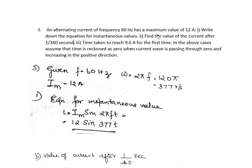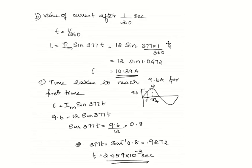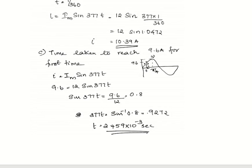The third part is to find the time taken to reach 9.6 ampere for the first time. This is the current wave with maximum value 12 ampere. At a particular time, it reaches 9.6 ampere for the first time. Using I = IM sin 377t, substitute I = 9.6: 9.6 = 12 sin 377t. From this equation, solve for the value of time t to get your answer.